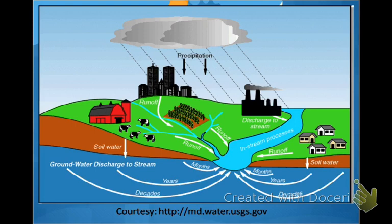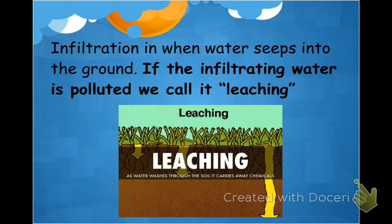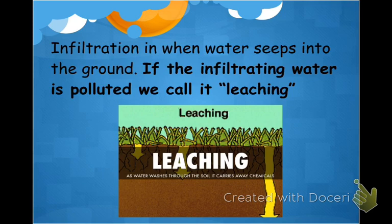When polluted water infiltrates the ground, we call that leaching. Infiltration simply means water is absorbed or soaking into the ground. If it's clean water soaking into the ground, we call it infiltration; if the water is polluted or contaminated, we say that water is leaching into the ground. Referring to it as either leaching or infiltrating tells you whether that water source is clean or dirty.